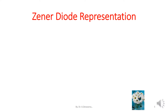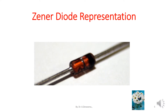Here is the representation of a Zener diode. The picture represents the Zener diode. In the Zener diode we have a black ring. The lead which is nearer to the black ring is the cathode terminal and the other lead is the anode terminal.